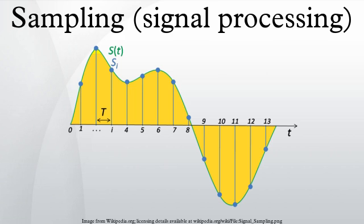In signal processing, sampling is the reduction of a continuous signal to a discrete signal. A common example is the conversion of a sound wave to a sequence of samples.